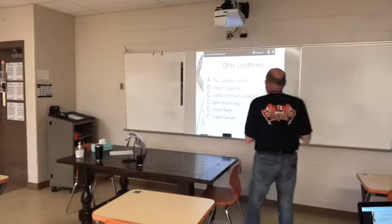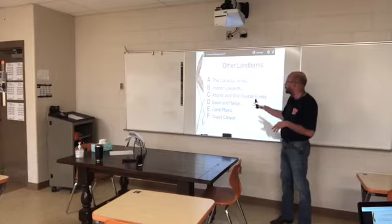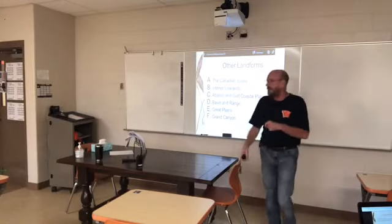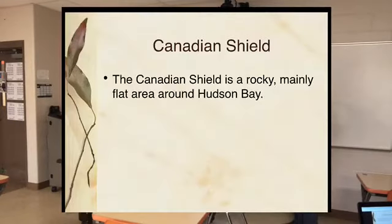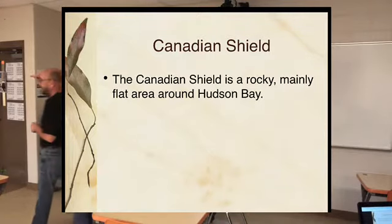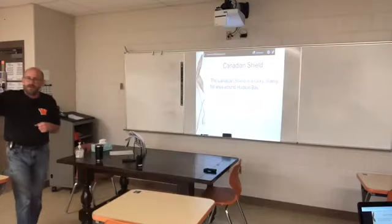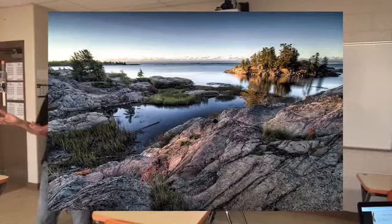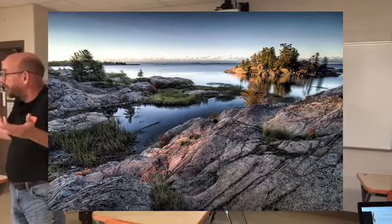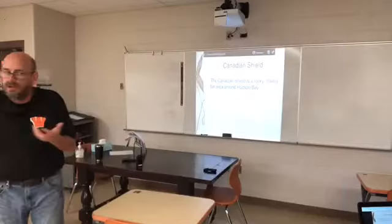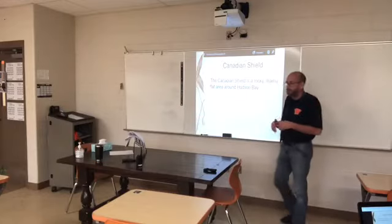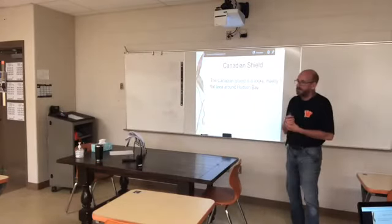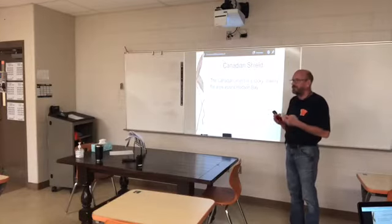We're going to talk about the Canadian Shield, the interior lowlands, the Gulf Coastal Plains, basins and ranges, Great Plains, and the Grand Canyon area. The Canadian Shield is an area up around Hudson Bay in Canada where glaciers came down and scraped off the surface, and bedrock is left. It's just a large surface of hard rock forming a shield over this area — a rocky, mainly flat area right around Hudson Bay. Not good farmland; you can't break bedrock easily.